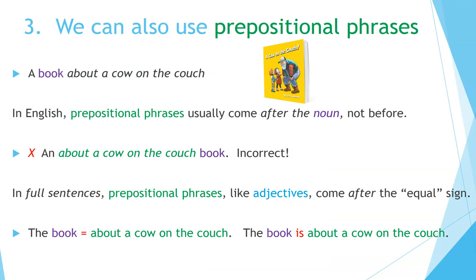Three: we can also use prepositional phrases. For example, a book about a cow on the couch. In English, prepositional phrases usually come after the noun, not before. We do not say 'an about a cow on the couch book' — that is incorrect. In full sentences, prepositional phrases, like adjectives, come after the equal sign. The book equals 'about a cow on the couch.' Sentence: the book is about a cow on the couch.